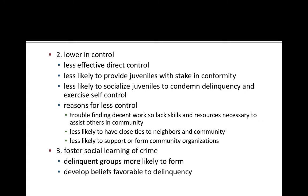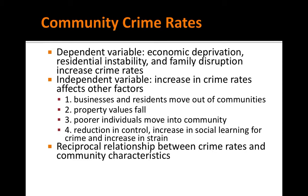Finally, we might see more social learning of crime. Delinquent groups are more likely to form, and those groups are more likely to develop beliefs favorable to delinquency. When we look at community crime rates, the key variables are economic deprivation, residential instability, and family disruption — and these increase crime rates.